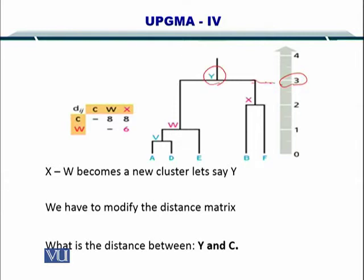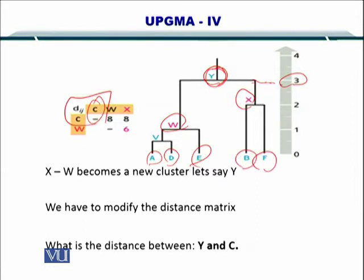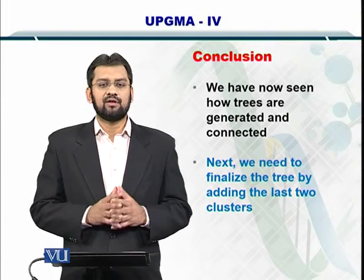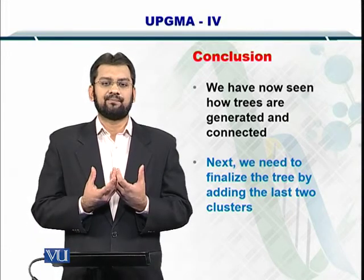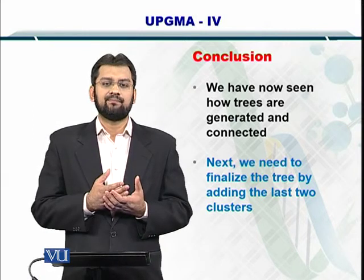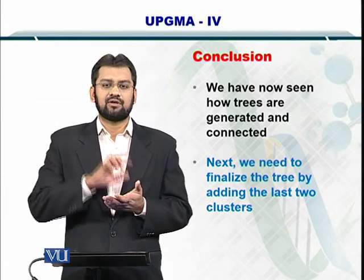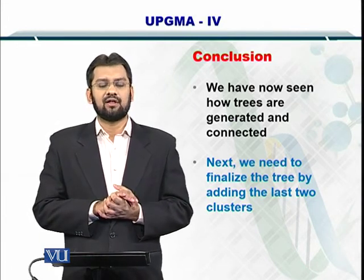And this is how the representation will be. So at 3, Y will connect W and X. Now, how do we connect the last element in this tree? Remember, we had A, B, C, D, E, F. So we have A, D, E, B, and F here, but C is still not connected. We will connect this in the next module. But the important thing to learn from this module is how do we connect two different trees? We simply take the sum of the distances between each element in the first cluster to the other elements in the second cluster or tree.